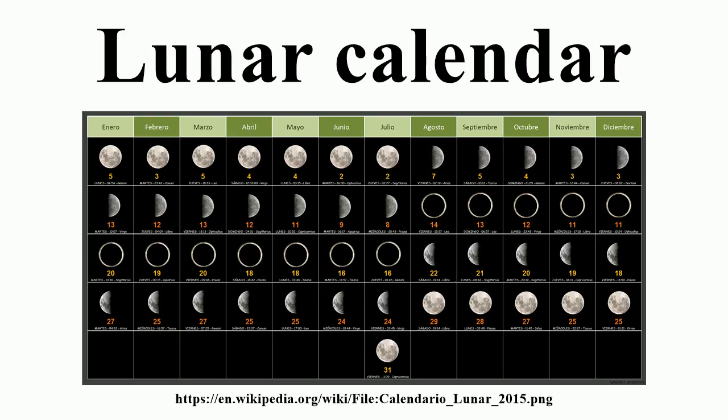Lunar and lunisolar calendars differ as to which day is the first day of the month. In some lunisolar calendars, such as the Chinese calendar, the first day of a month is the day when an astronomical new moon occurs in a particular time zone. In others, such as some Hindu calendars, each month begins on the day after the full moon or the new moon. Others were based in the past on the first sighting of a lunar crescent, such as the Hebrew calendar.